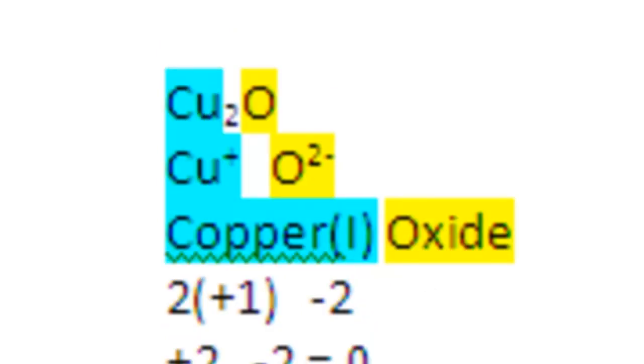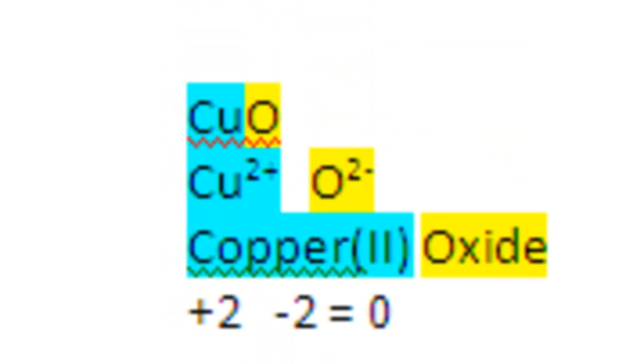This is copper 2 oxide. And let's examine why this is copper 2 oxide. For the same reason that FeO was iron 2 oxide.